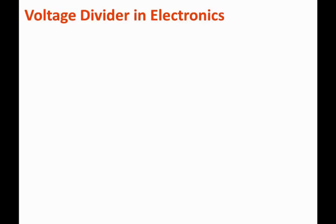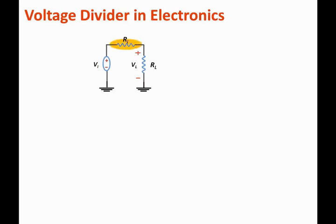Our next topic is voltage dividers. Let us have a circuit as the one shown here. In the circuit, we have a voltage source — we call it VI, which stands for the input voltage source — with internal resistance Ri.